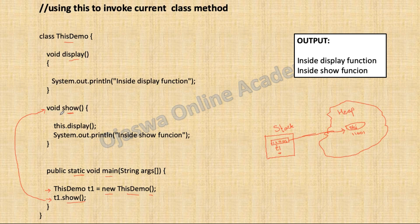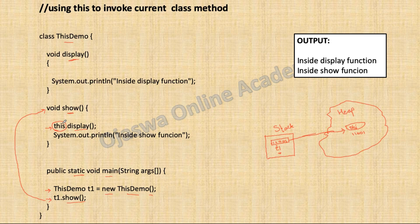When the control comes inside the show method, the first statement is a call to the display method. Display is a non-static method. We are not creating any new object to call display — we are invoking display using the current object: this. So this.display gives a call to display method, and control goes to the display method.